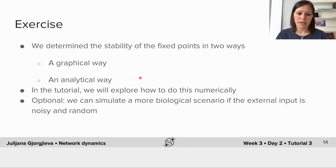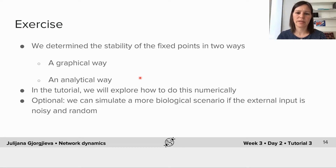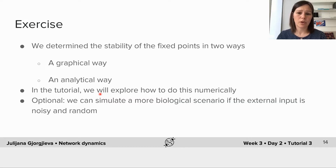To summarize, today's tutorial covered two ways to determine the stability of fixed points. First, a graphical way: simply looking at the direction of flow in the phase plane — fixed points are stable if trajectories flow towards them and unstable if they flow away. Second, an analytical way: perturbing the activity around a fixed point and using linearization techniques to derive a differential equation telling us whether the perturbation grows or decays. In the tutorial exercises you will find fixed points and determine their stability both graphically and algebraically, and optionally simulate a noisy, random external input scenario.